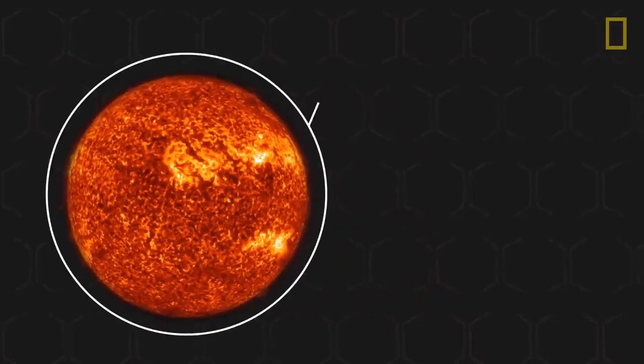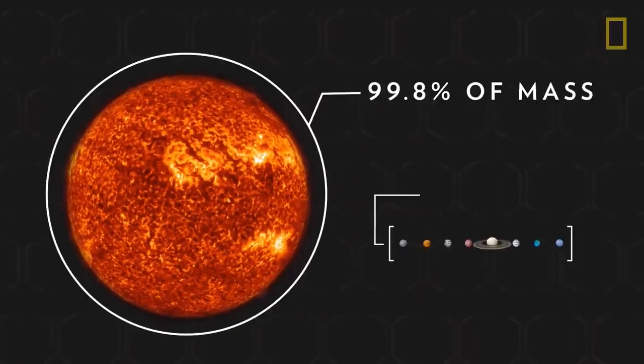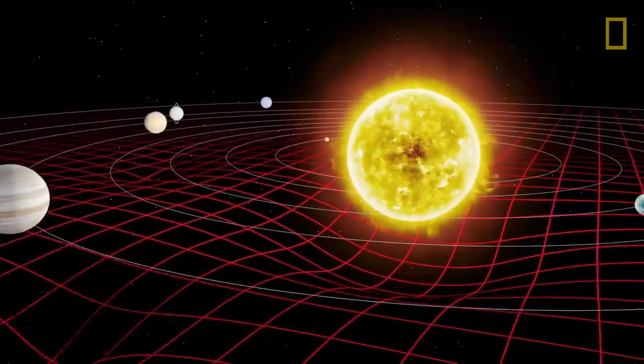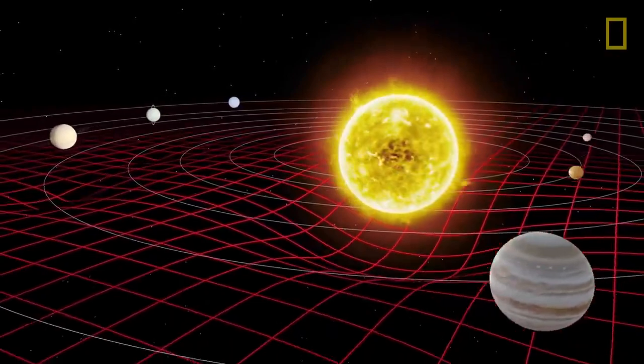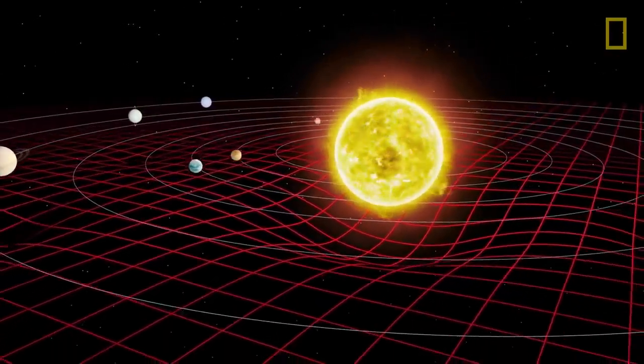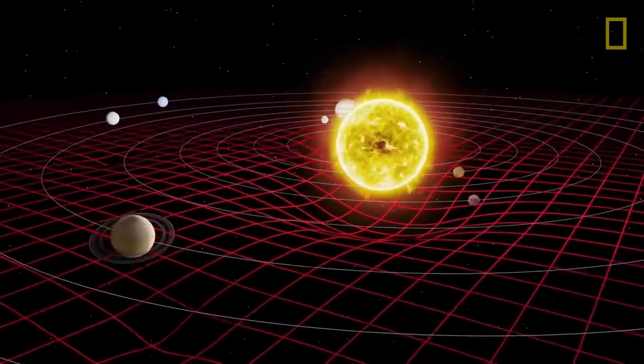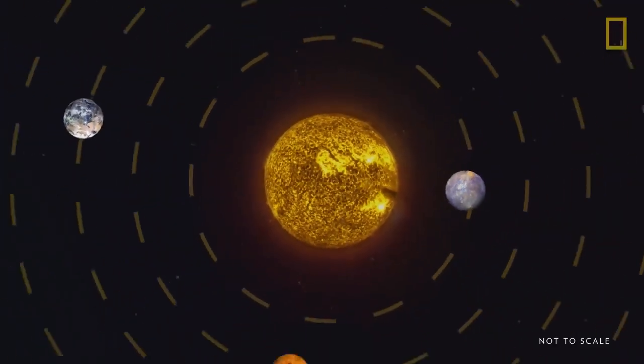It also contains approximately 99.8% of all the mass in the solar system. Because of this mass, the sun has a great pull on the fabric of space, creating a gravitational force that causes nearby planetary bodies to be drawn toward it.